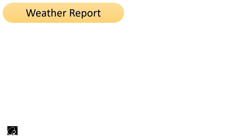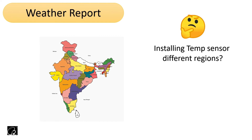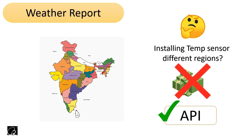Let's start with an example. Say you need to create an application that shows the weather report - temperature in different regions across India. You might think of installing multiple temperature sensors in different regions to get that data, but that's not the right way because it costs a lot of money and time. The best approach is using an API - someone else has already done it, they have their own sensors, and we can get the data from their server.